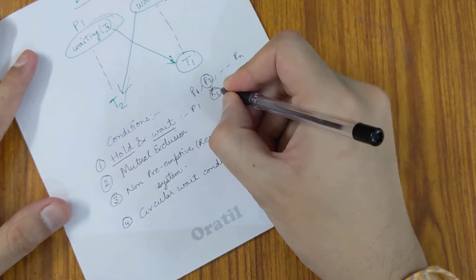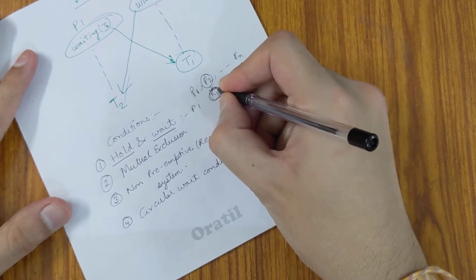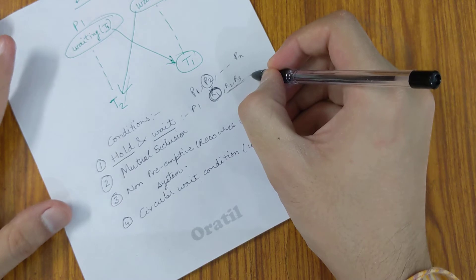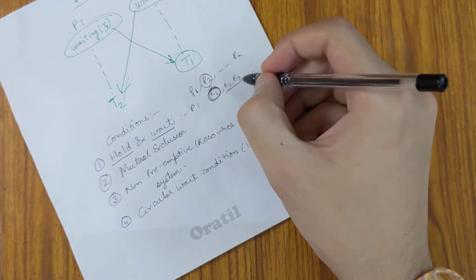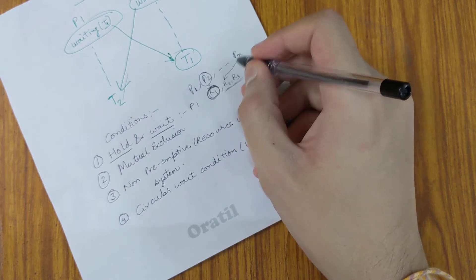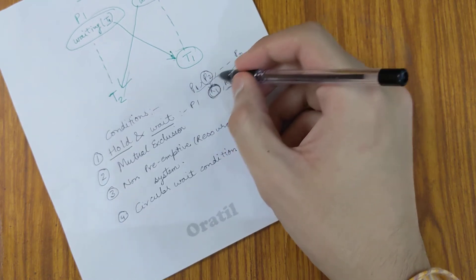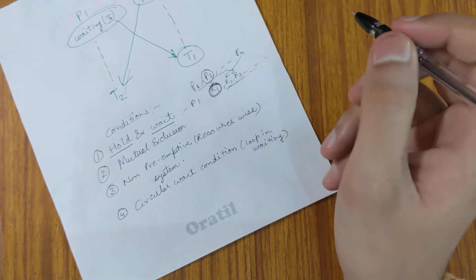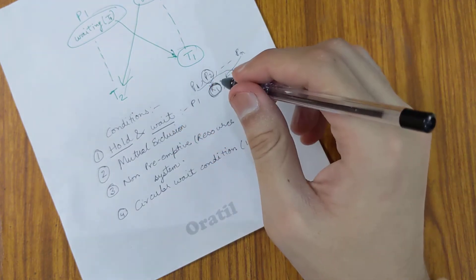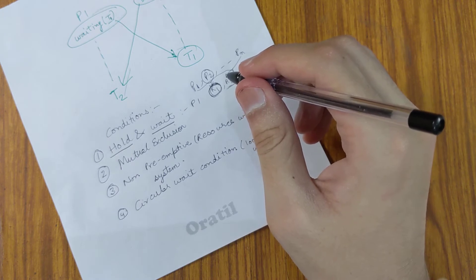So it has a hold of one resource but is waiting on some other resources, and these resources are currently held by other processes. For instance, Pn is holding R2, P1 is holding R3, and so on. I think you understood this condition.